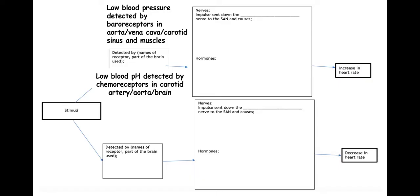Another receptor is the chemoreceptor, and this will detect a low blood pH. A low blood pH occurs because of a lot of hydrogencarbonate ions formed in the Bohr effect, and also a lot of acidic substances formed. If you need a recap of this, I'll post a link in the description below regarding the Bohr effect as well.